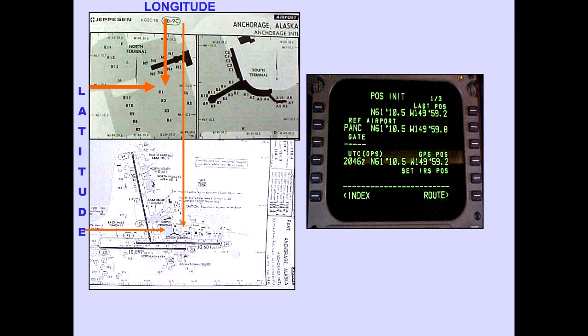If GPS position is not available, use the next most accurate coordinates in this order of preference: gate or ramp coordinates, reference airport coordinates. Finally, manually compute and enter your coordinates in the set IRS position line. Don't forget to write the chosen coordinates on the master flight plan.